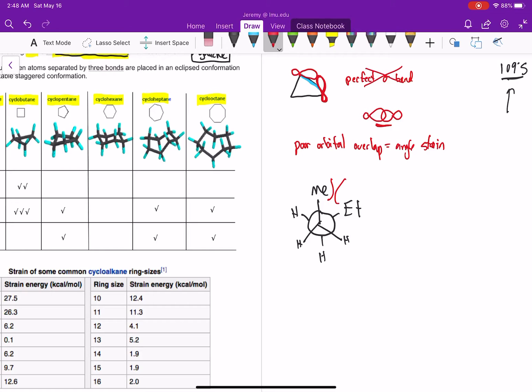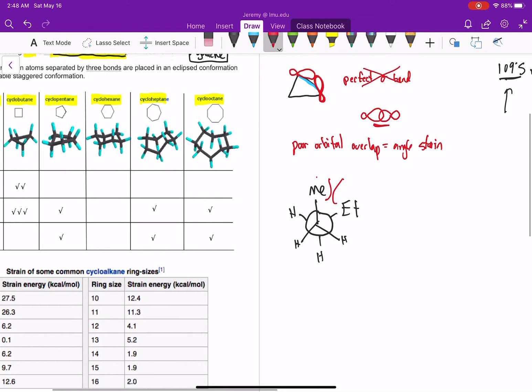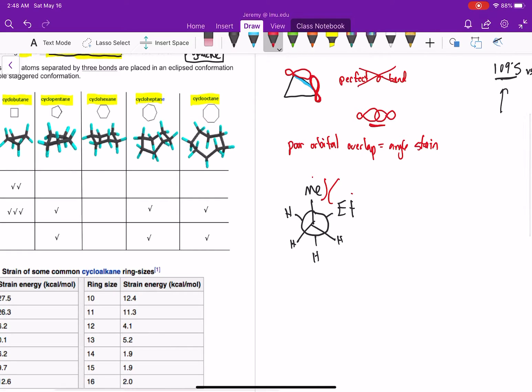These atoms are four bonds away because the hydrogens on the methyl are interacting with the hydrogens on the ethyl. That's four bonds or greater away. So that is a gauche interaction or a gauche strain. It increases the energy of the molecule, and we can generally call that steric strain.